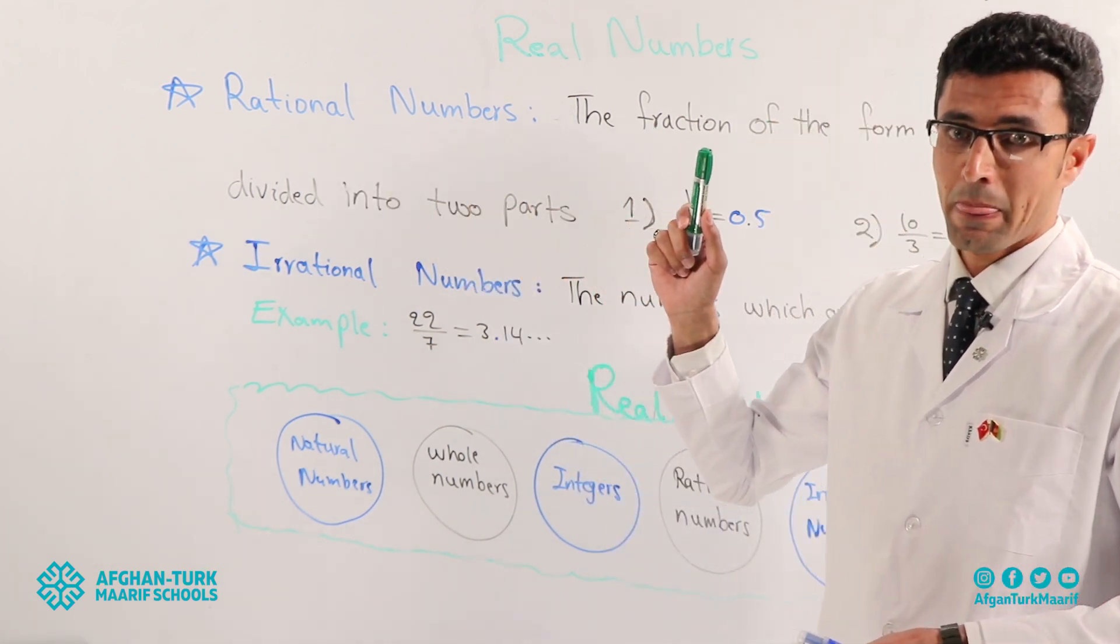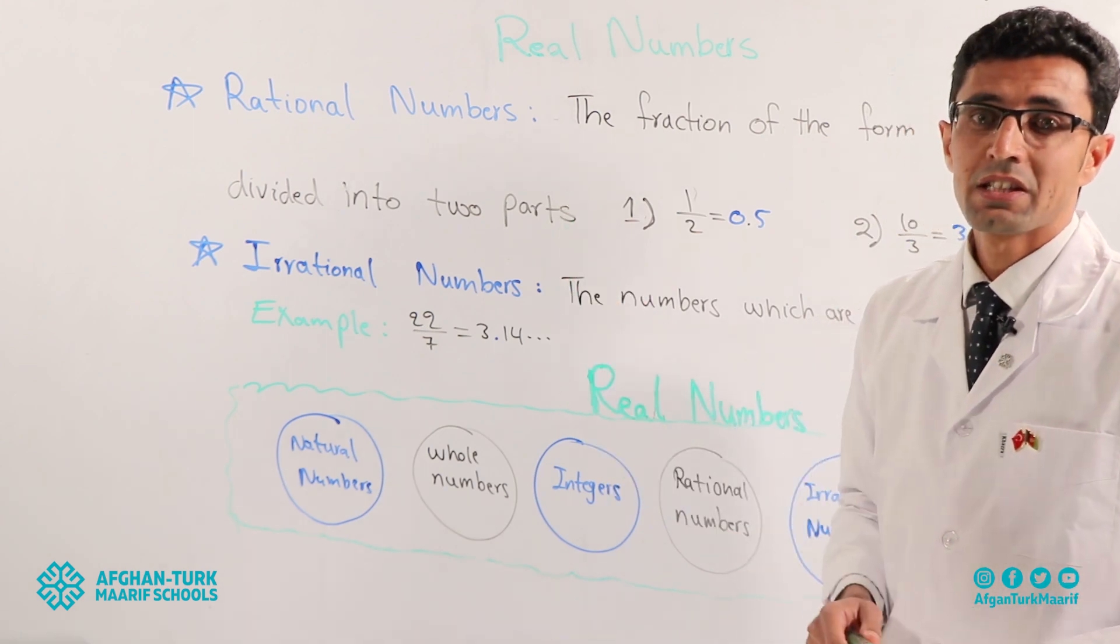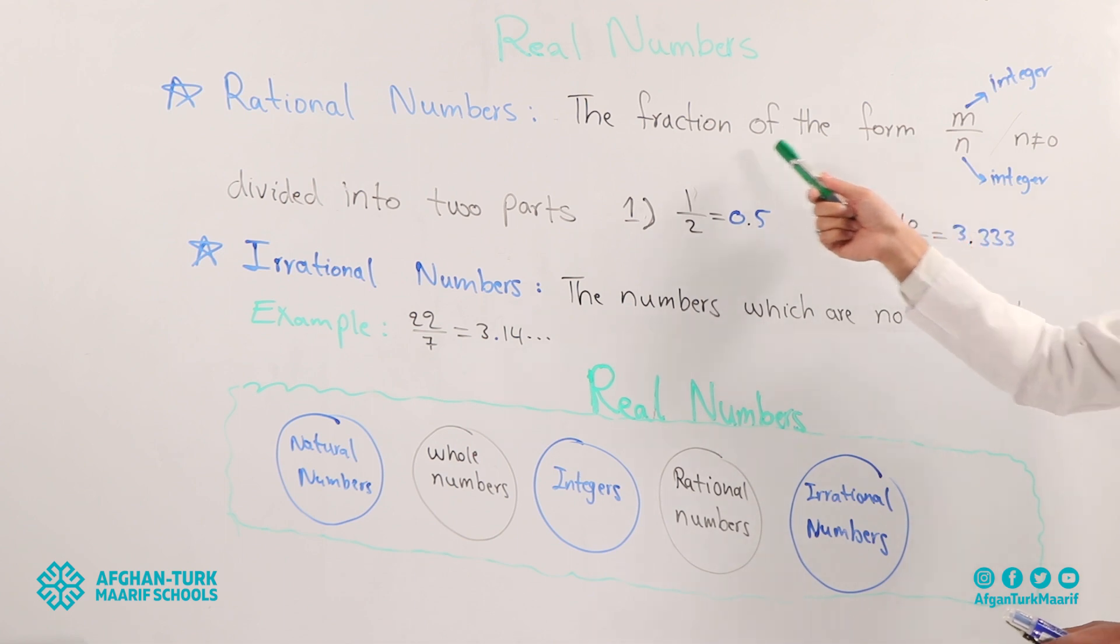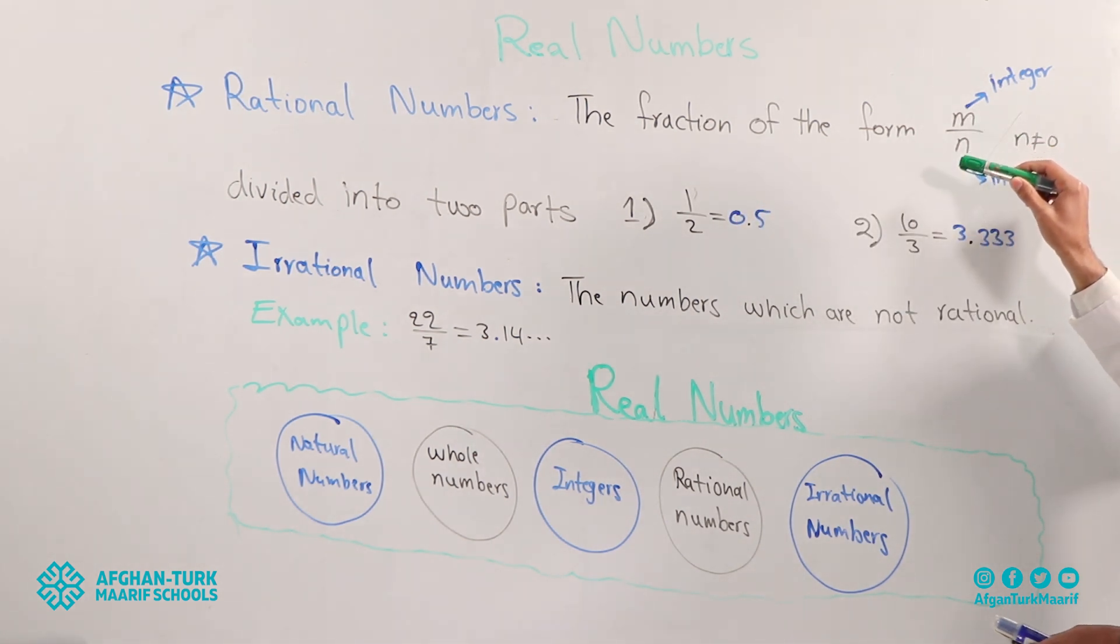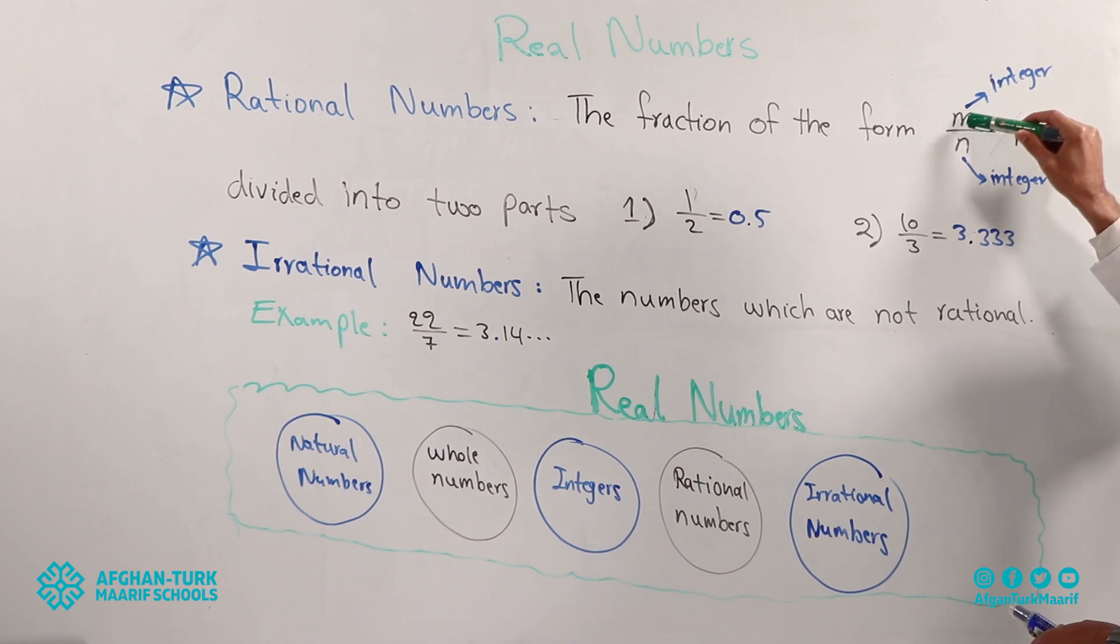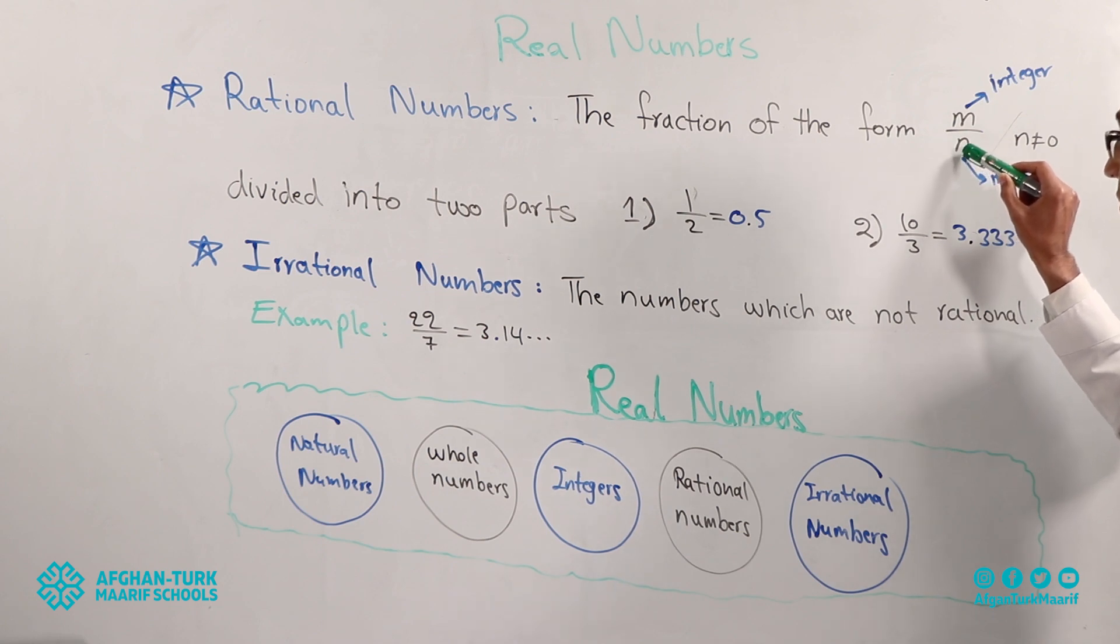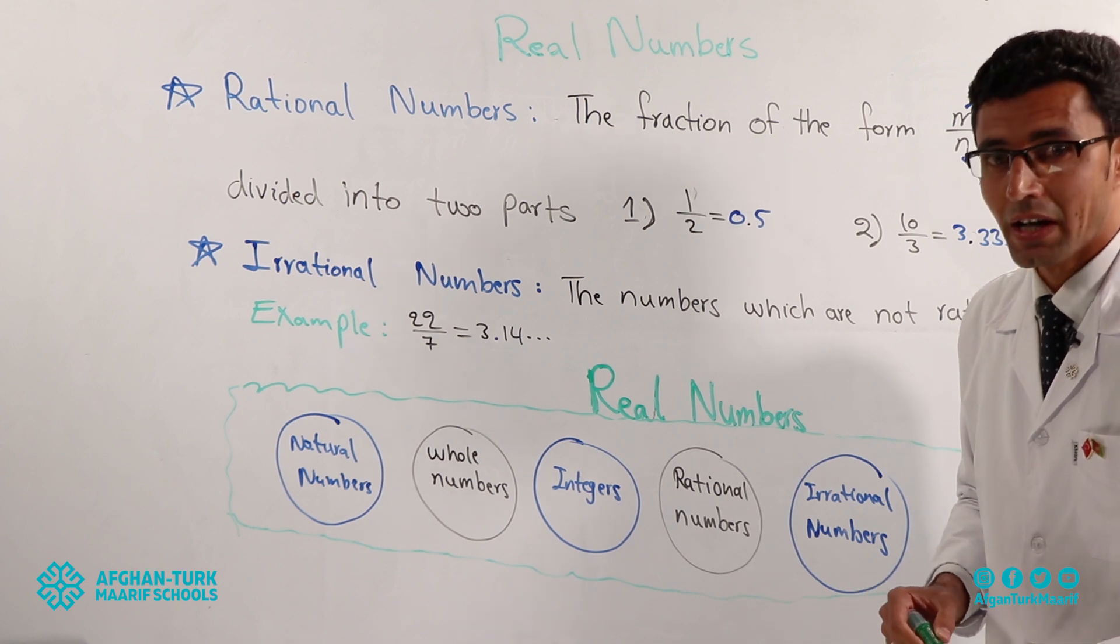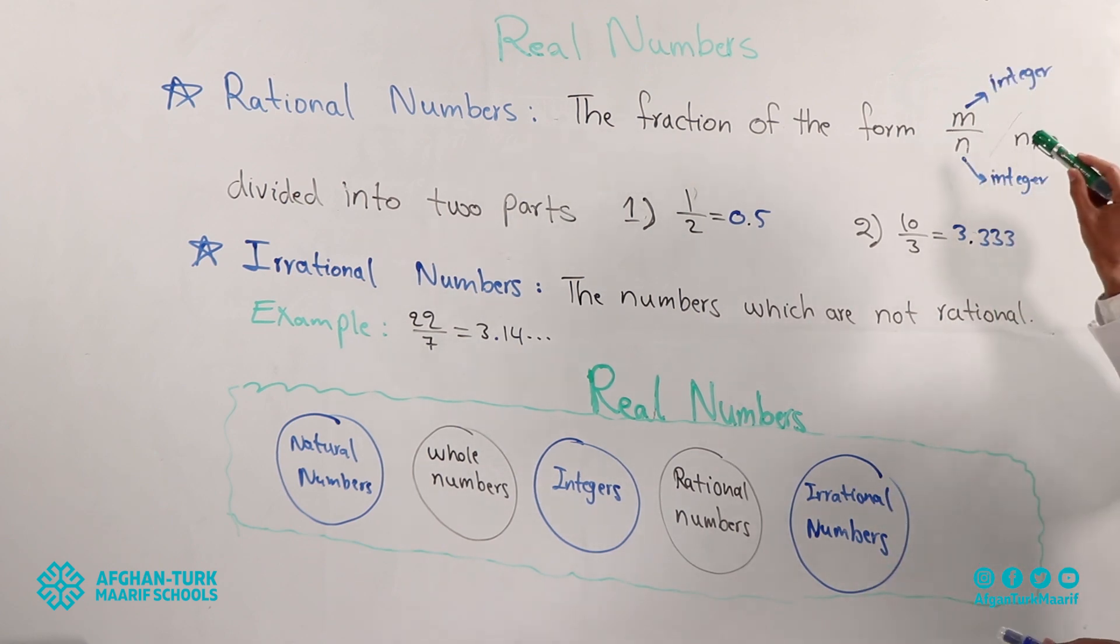What type of numbers are called rational numbers? The fraction of the form - you know fraction. This is a fraction. The fraction of the form M divided by N or M over N. What are these? M is an integer. N is an integer. You know integers now. Such that N is not equal to zero. If N is zero, so any number divided by zero is not defined.